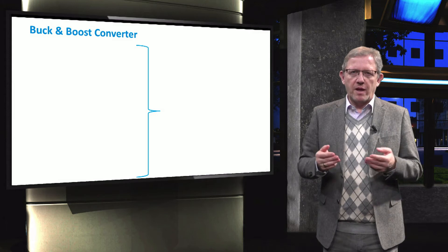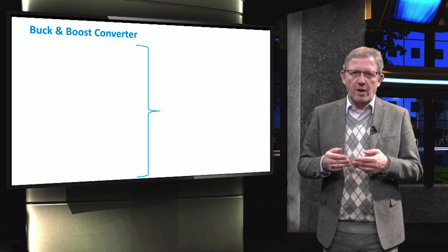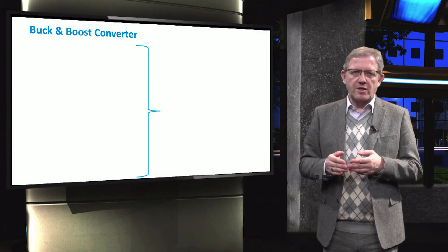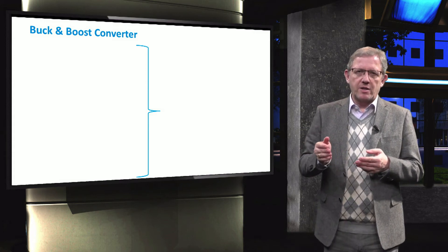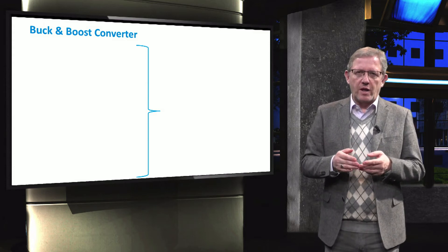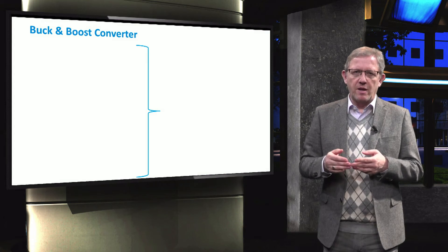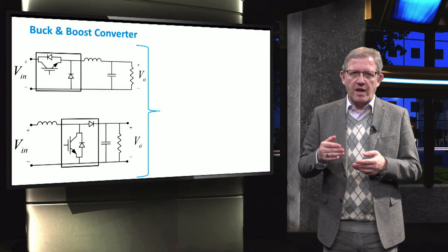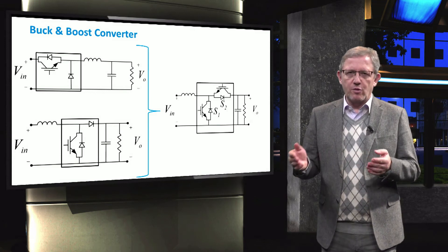How can we make a DC-DC converter topology which would be able to step up and transfer power from the lower to higher voltage and at the same time step down and transfer the power back from the higher to lower voltage? We can combine the previous two topologies, namely the buck converter and the boost converter and we create the so-called buck and boost topology.